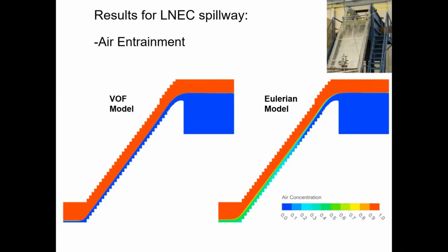Looking at model results, comparing the VOF model against the Eulerian model — already it looks good because we're seeing some air concentration and bulking of the flow. However, there is some artificial air getting entrained higher up the spillway — the inception point is probably around a certain step, but the Eulerian model gets some artificial air coming in a bit too early. The VOF model actually looks a bit better early on, but then doesn't have air entrained further downstream.